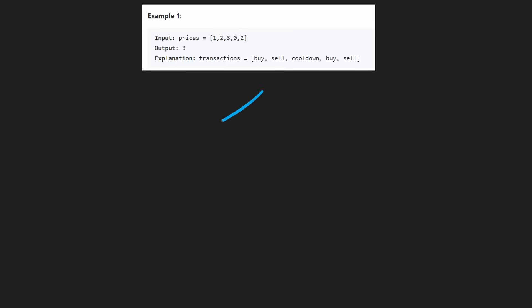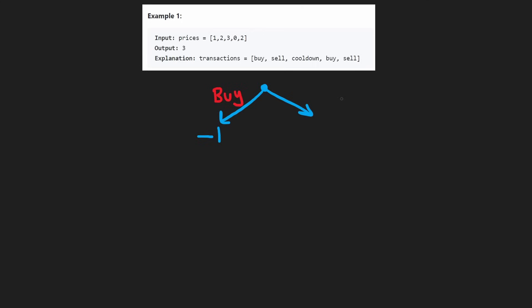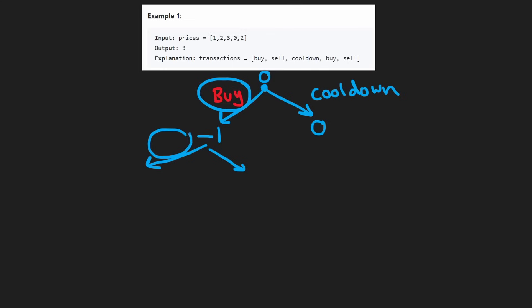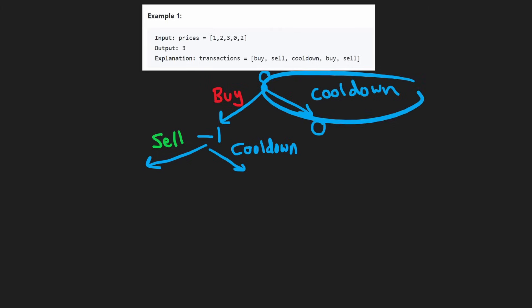At index zero we have a choice: we can buy, or we can do a cooldown. If we buy on day zero, it costs one, so our total profit so far is negative one. We can't sell yet since we don't own anything, but we can do a cooldown — in that case our profit stays at zero. On the left path after buying, we can now sell or do a cooldown. We can't buy again since we already hold the stock. On the right path after cooling down, the same decisions as the original are present: buy or cooldown again.